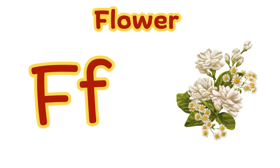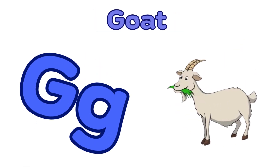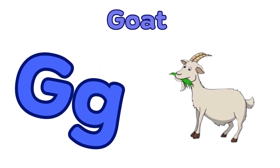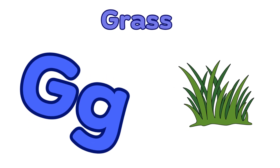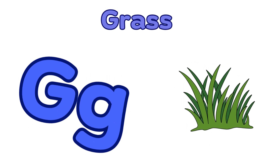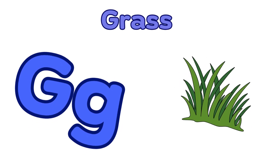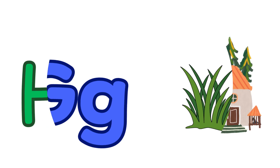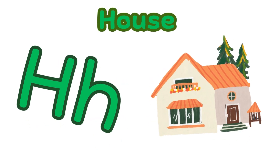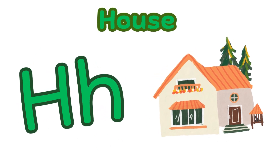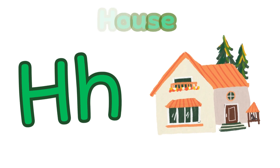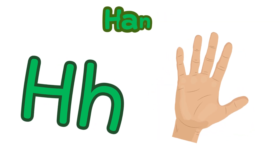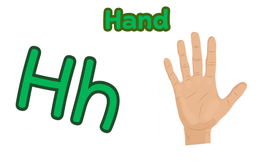G is for goat. G, g, g — goat. G is for gift. H is for house. H, h, h — house.